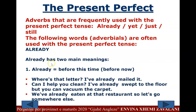'Already' has two main meanings. First meaning: before now / before this time. Examples: 'Where's that letter? I've already mailed it.' 'Can I help you clean? I've already swept the floor, but you can vacuum.' 'We've already eaten at that restaurant, so let's go somewhere else.'